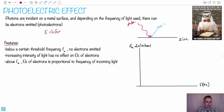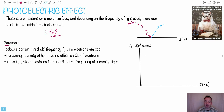Remember the equation E equals hf — the energy of light is dependent on the frequency. In the early 1900s, it made sense to people that if this effect was happening, these electrons should also be given that energy. If a photon comes in with energy E equals hf, it should make sense that those electrons would have that same energy. They fully expected this graph to be linear — at no frequency, no energy out; at larger frequencies, larger electron energies.